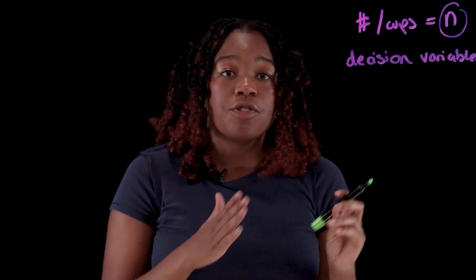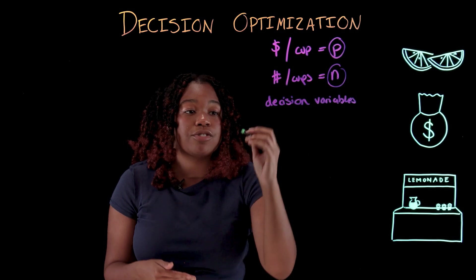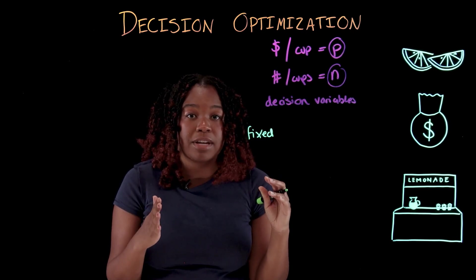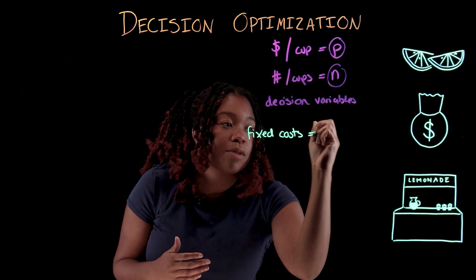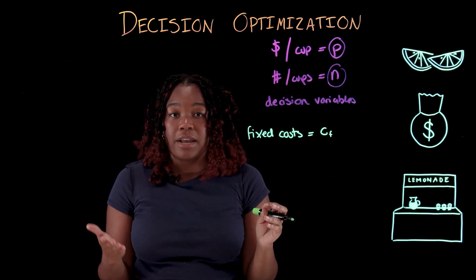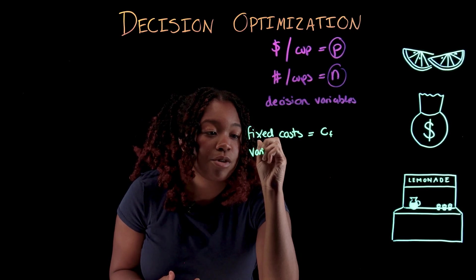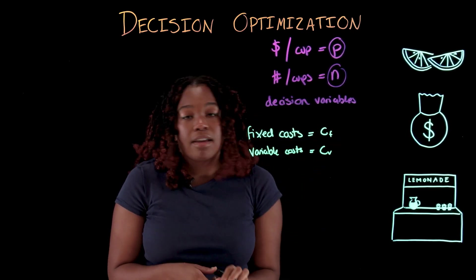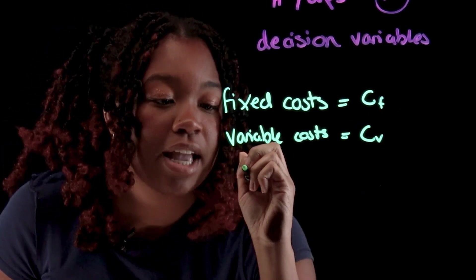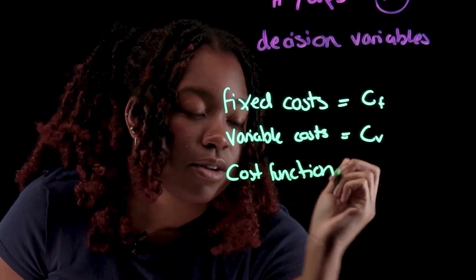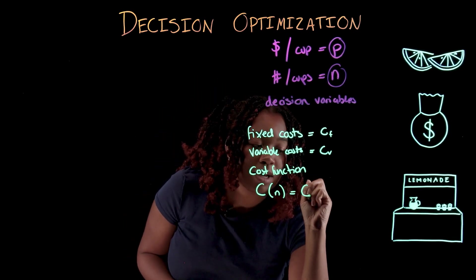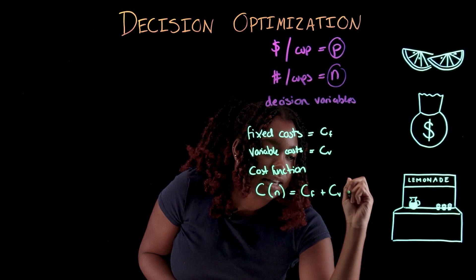We'll also need to consider the cost to produce each cup of lemonade. This can include fixed costs, such as the cost of the lemonade stand itself — costs that don't change no matter how many cups we produce. We can write the fixed cost as a variable CF. We also need to consider variable costs, which vary depending on how many cups are produced, written as CV. An example of a variable cost would be the cost of the lemons. We can use these two costs to create a cost function C(N) — the cost per number of cups produced — equal to CF plus CV times N.